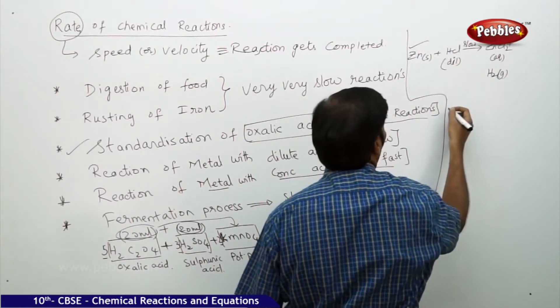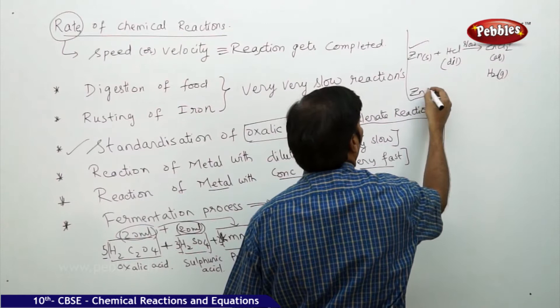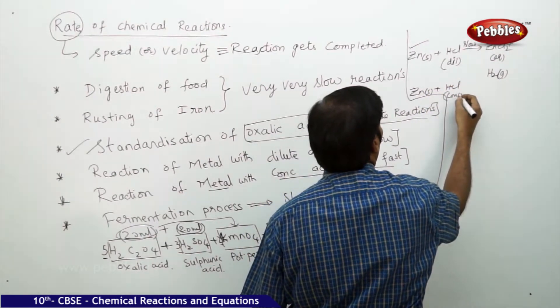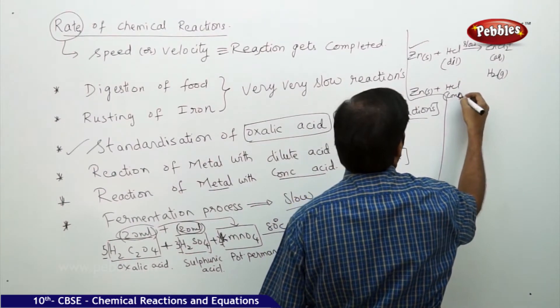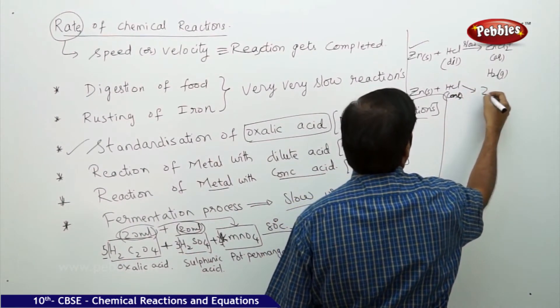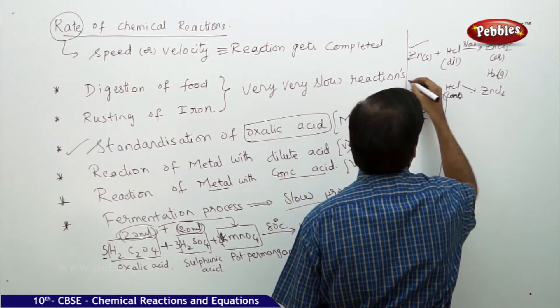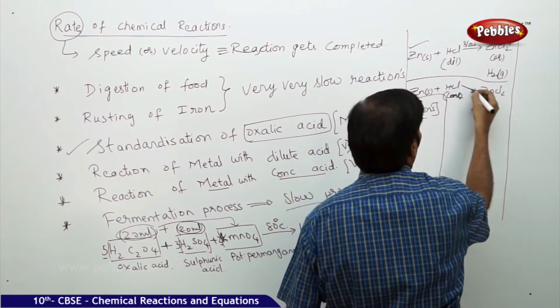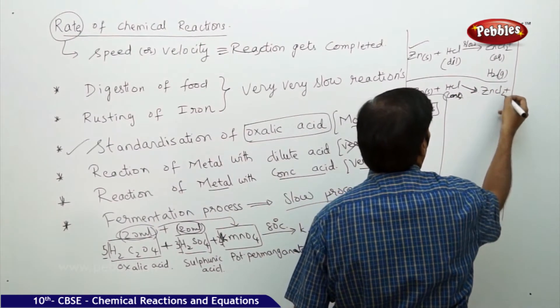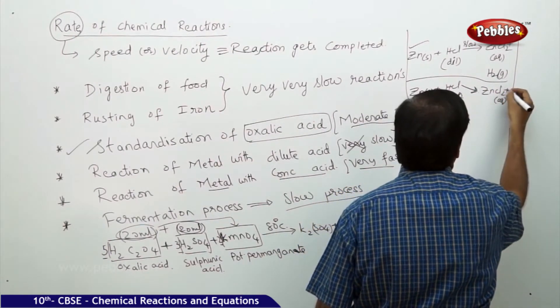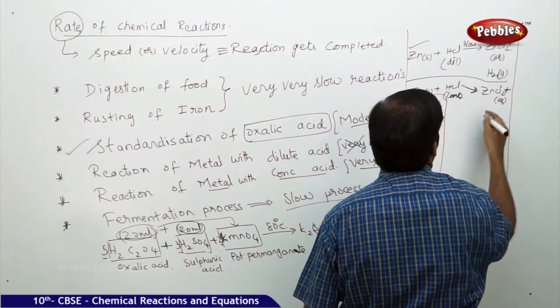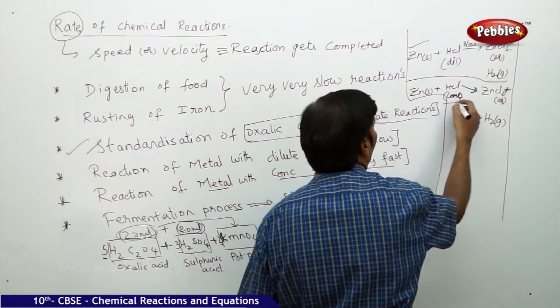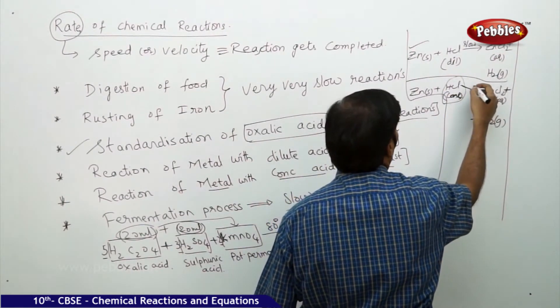But the same reaction if you carry out with zinc solid reacting with HCl concentrated, then you find that immediately you are going to get zinc chloride aqueous plus H2 gas. Because the acid is concentrated, the reaction becomes very fast.